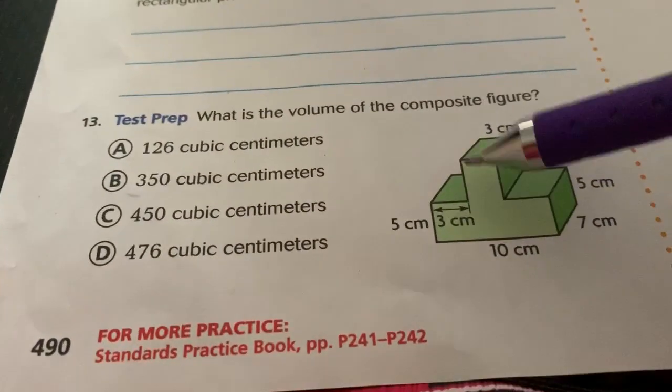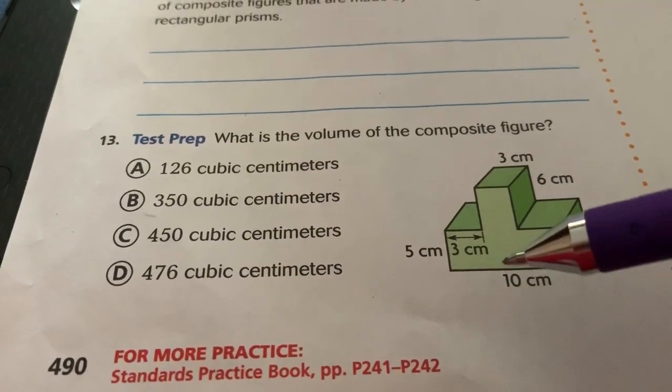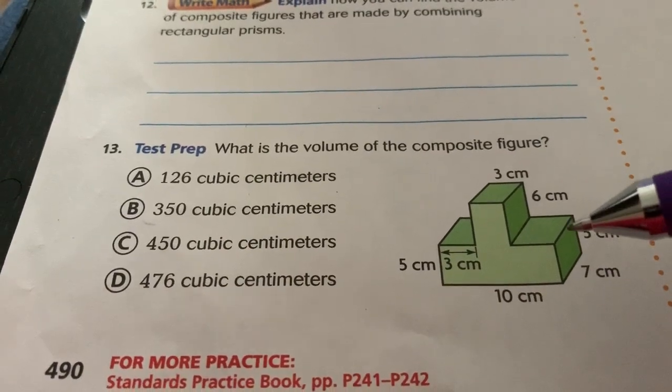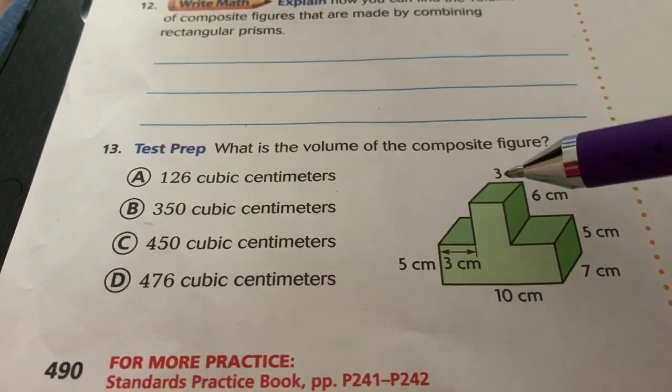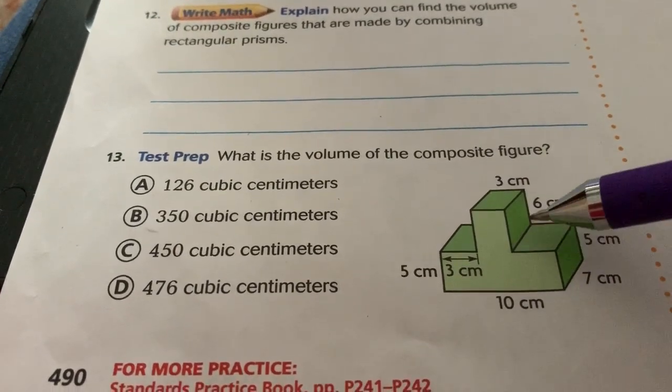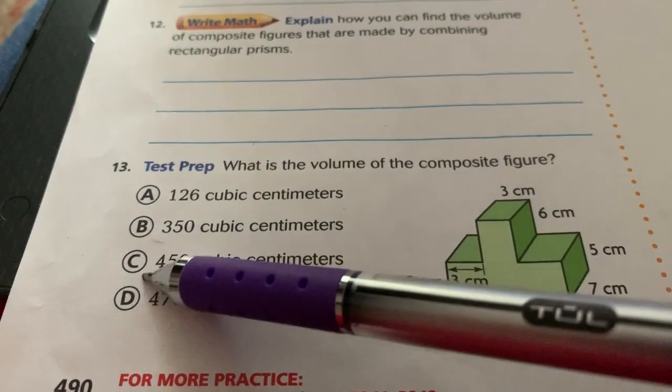Then you added the little rectangle at the top. You had to subtract the 3 from here. You have 3 centimeters, and then you do this one and this one, add them all together, and that would have given you 476 cubic centimeters.